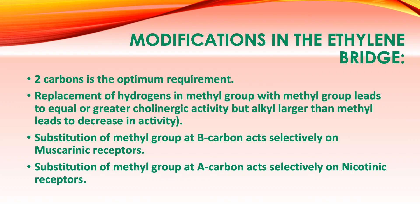So with the two carbons in the bridge: attaching an alkyl group on the alpha carbon gives nicotinic receptor affinity or selectivity, while substituting the beta carbon shifts acetylcholine's affinity toward the muscarinic receptor. An activity for this part: look for one example of a drug more selective to the muscarinic receptor and one more selective to the nicotinic receptor, and check for the presence of substitution at their respective alpha and beta carbon positions.